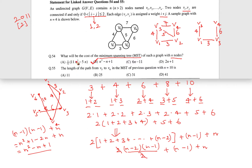In the last video, we solved the first part of the question. Let us come back to the second part. The second question is: the length of the path from V5 to V6 in the MST of the previous question with n equal to 10 is what?